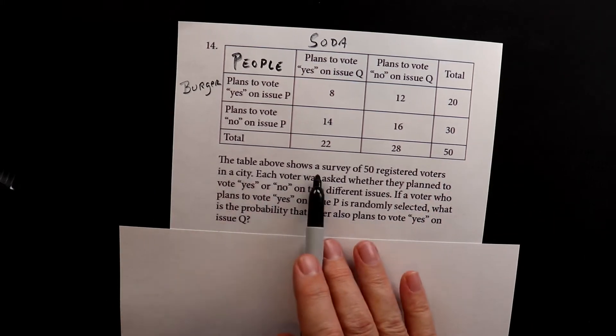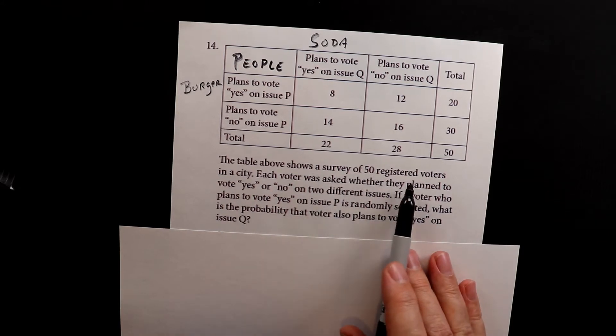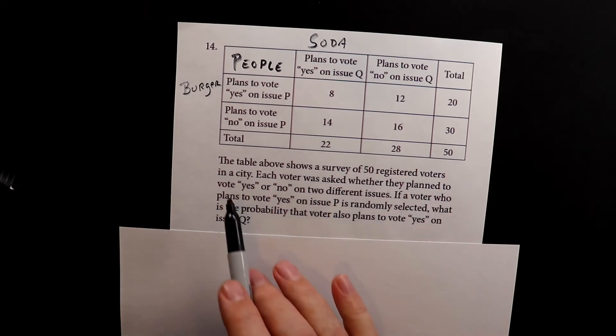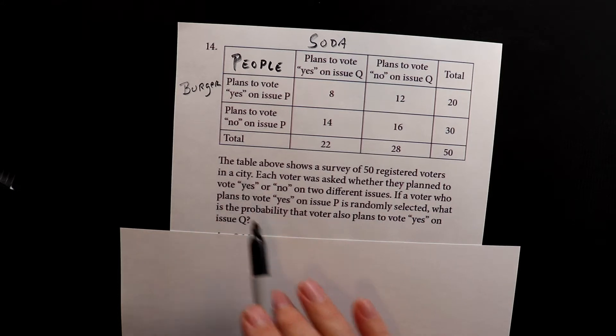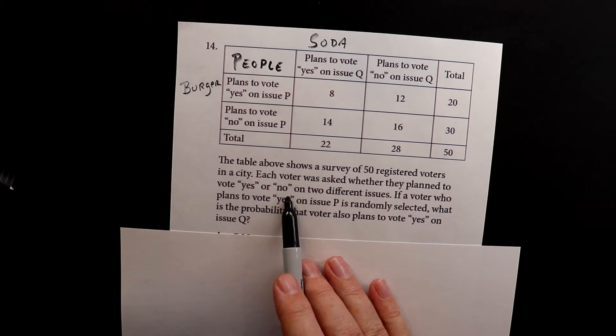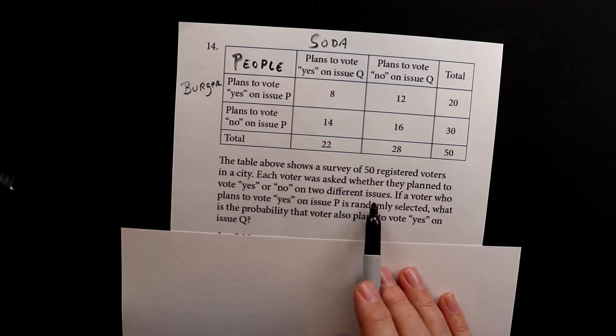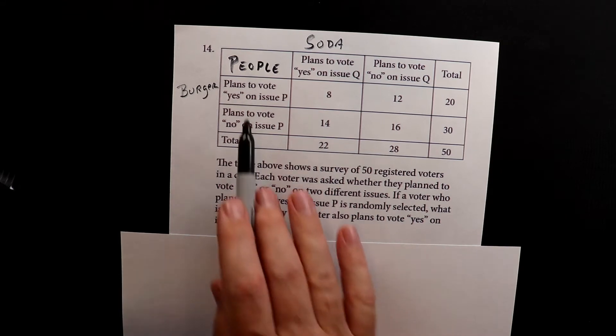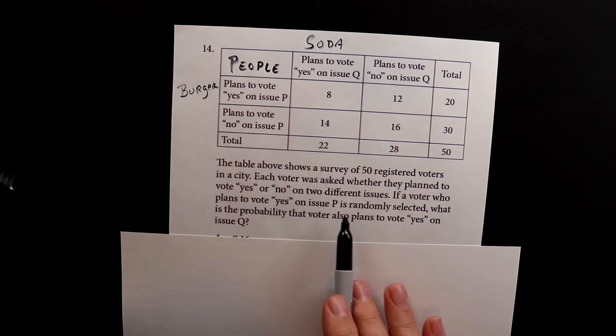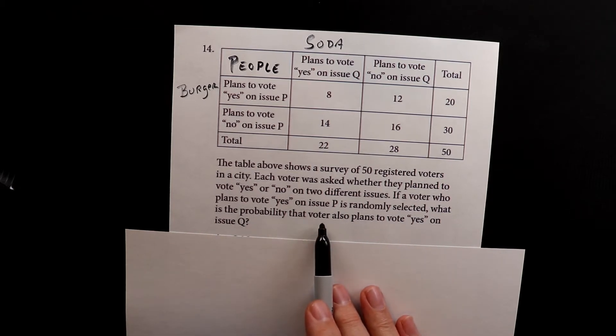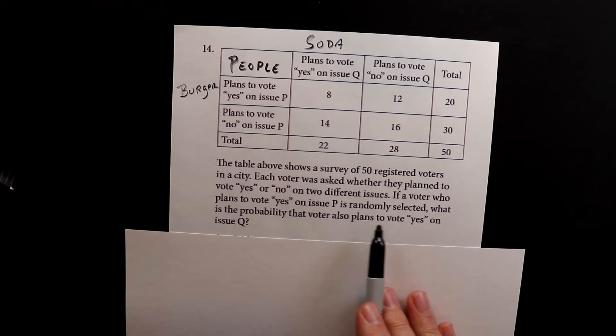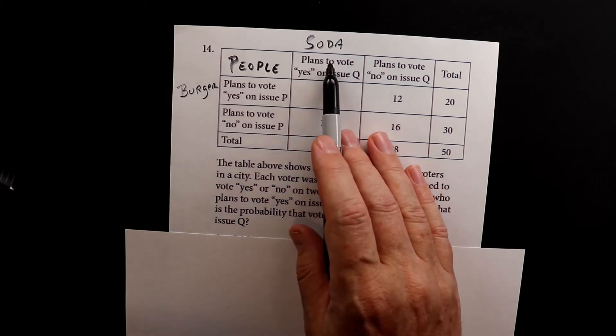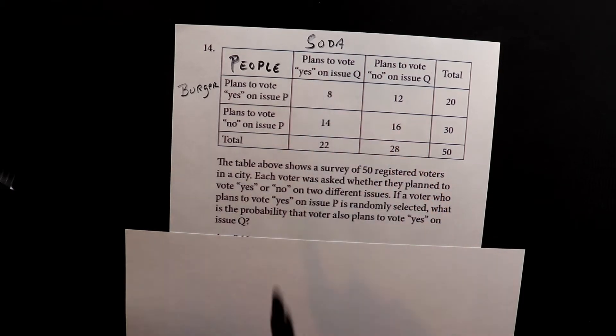The table above shows a survey of 50 registered voters. Each voter is asked whether they plan to vote yes or no on those two very important issues. If a voter who planned to vote yes on issue P, so this is issue P, is randomly selected, what is the probability that that voter also plans to vote yes on issue Q, which is the soda issue?